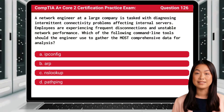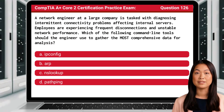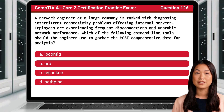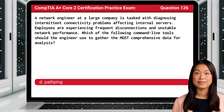Question 126. A network engineer at a large company is tasked with diagnosing intermittent connectivity problems affecting internal servers. Employees are experiencing frequent disconnections and unstable network performance. Which of the following command line tools should the engineer use to gather the most comprehensive data for analysis? The answer is D: PathPing.